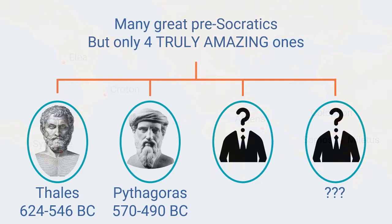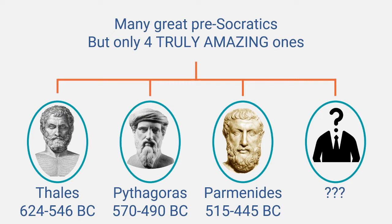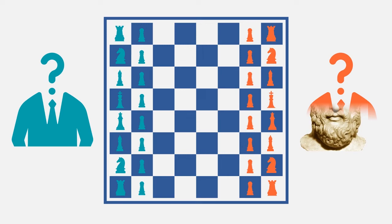Now, I call Parmenides one of the four major pre-socratic philosophers, along with Thales and Pythagoras, because his theories are among the most profound and impactful in Western philosophy. And he also represents one of the two sides in what I have previously called the greatest debate of all time.